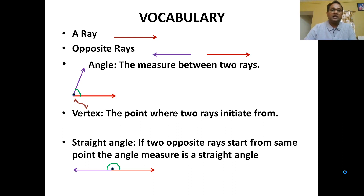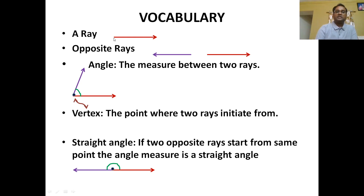Before we start the lesson, let us know some vocabulary terms. What is a ray? A ray starts from a point and goes endlessly in one direction. Here you can see a ray — this is its starting point and an arrow shows that this ray moves endlessly in this particular direction. Two rays are called opposite rays if they are traveling in exactly opposite directions.